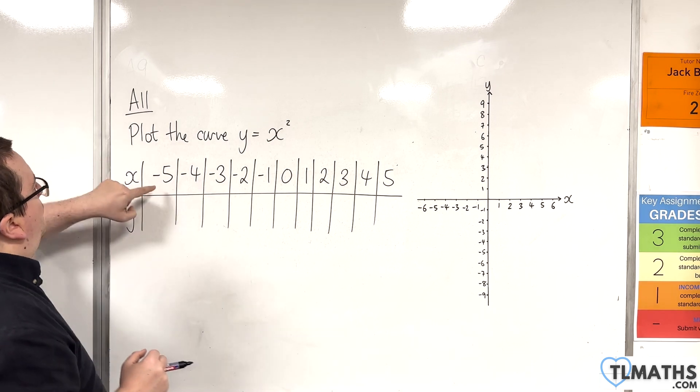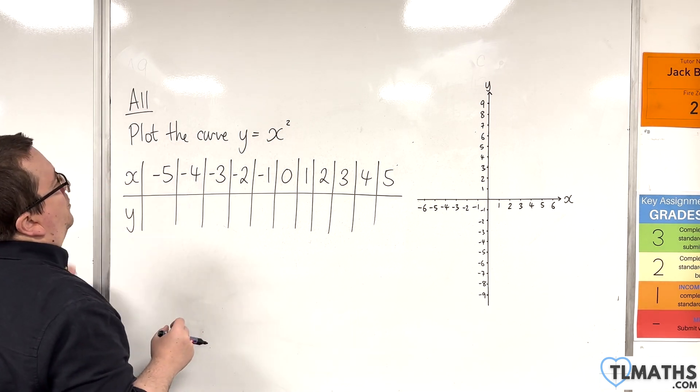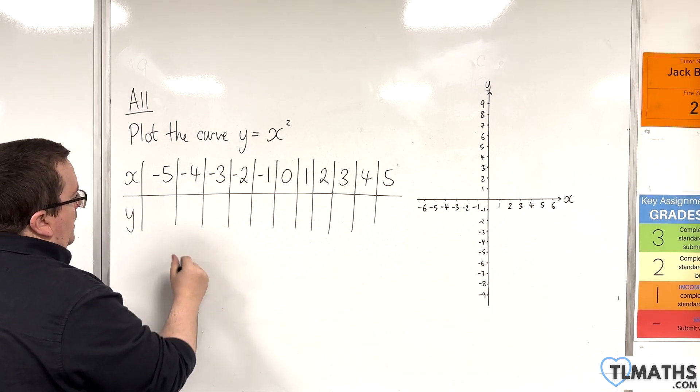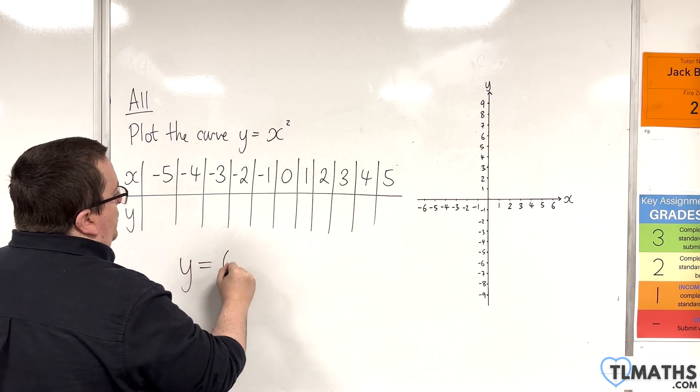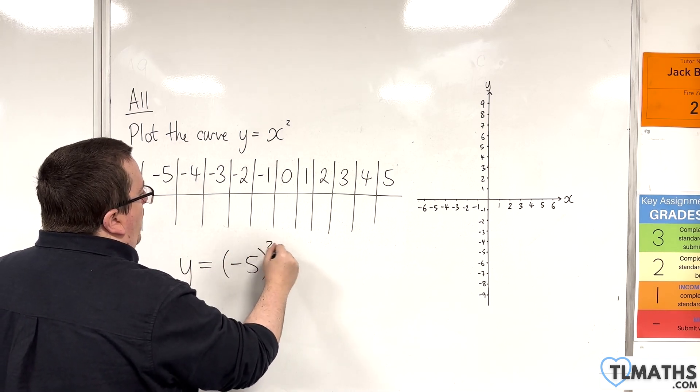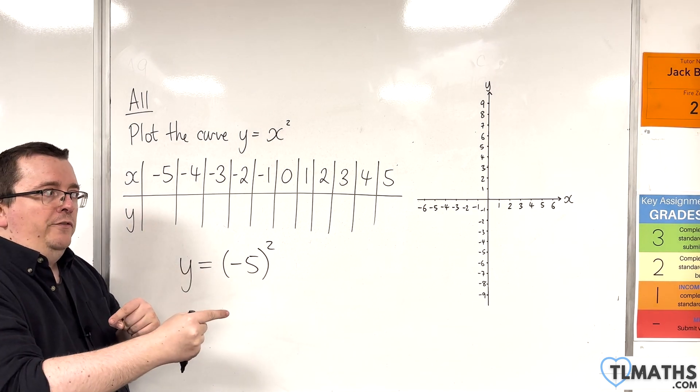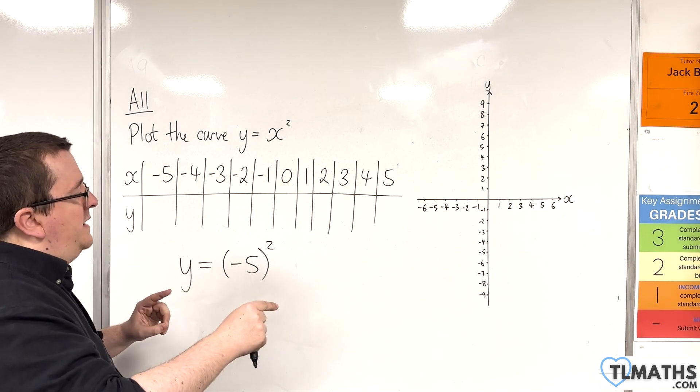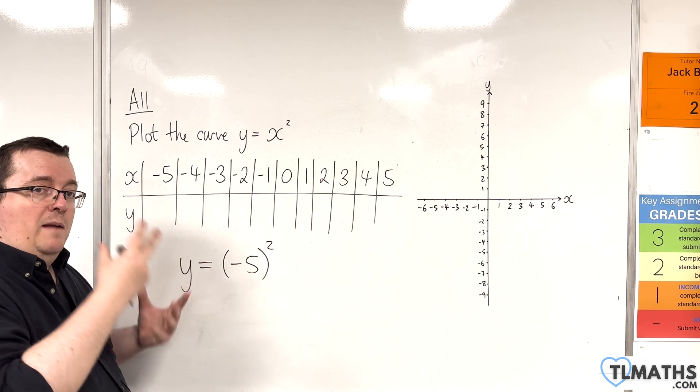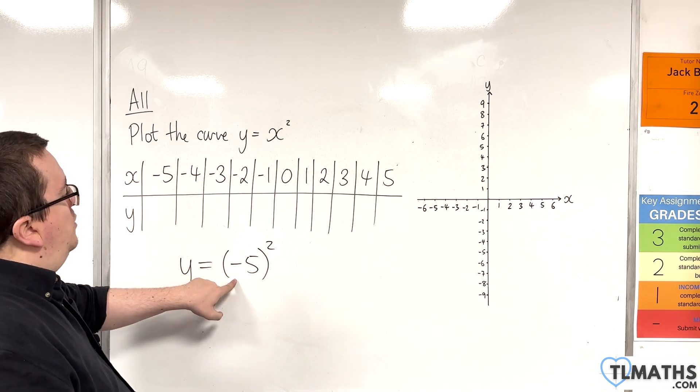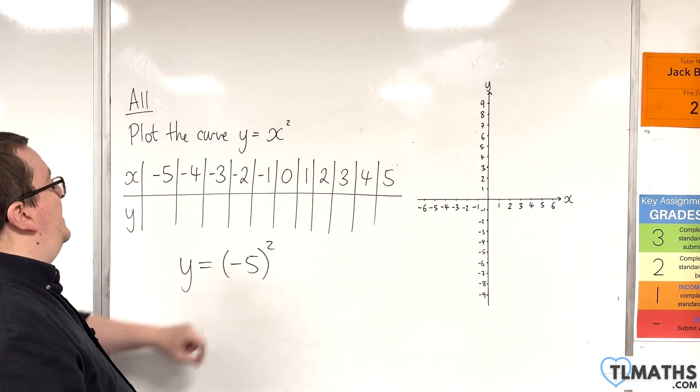So, if I'm substituting x equals minus 5 into this, I'm going to get y is equal to minus 5 squared. Minus 5 times minus 5. Because you've got two negatives, they'll multiply together and make a positive. So minus 5 times minus 5 is 25.